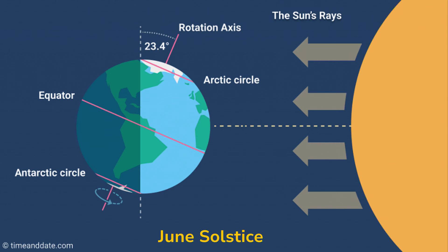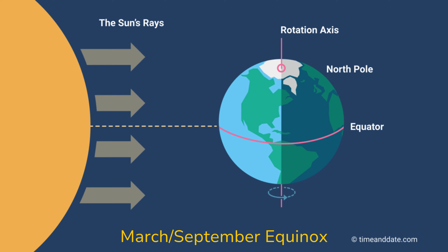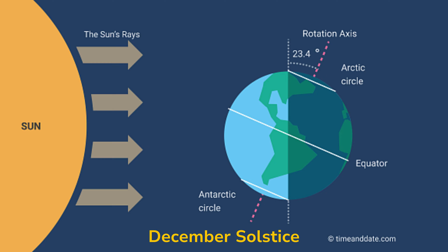In June, the southern hemisphere is tilted away from the sun; the light and heat is more spread out, so it's cooler and they have their winter. In March and September, the Earth is neither tilted towards nor away from the sun — the light and heat is distributed evenly, and so the planet is in spring or autumn. In December, the northern hemisphere is tilted away from the sun, so it's in winter, whilst the southern hemisphere is tilted towards the sun and so is in summer.